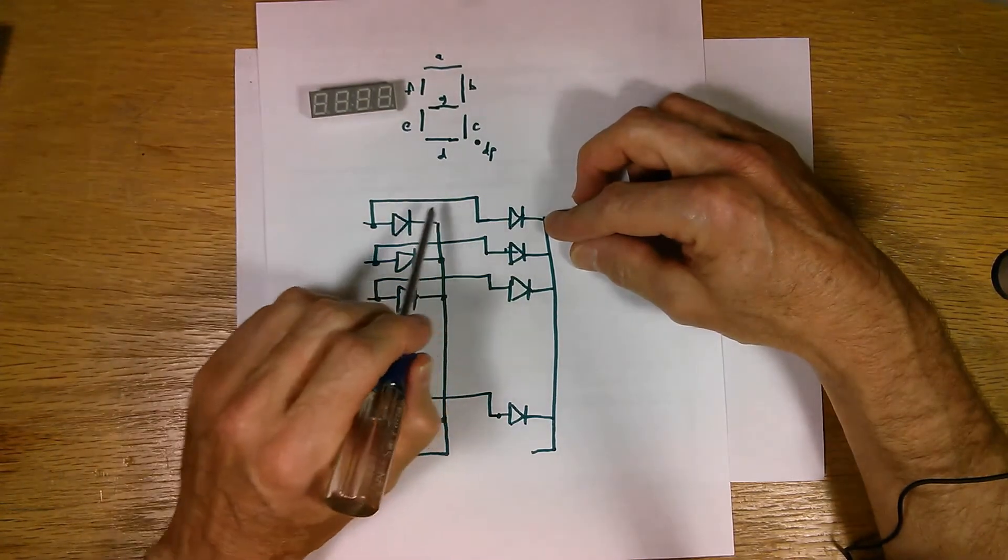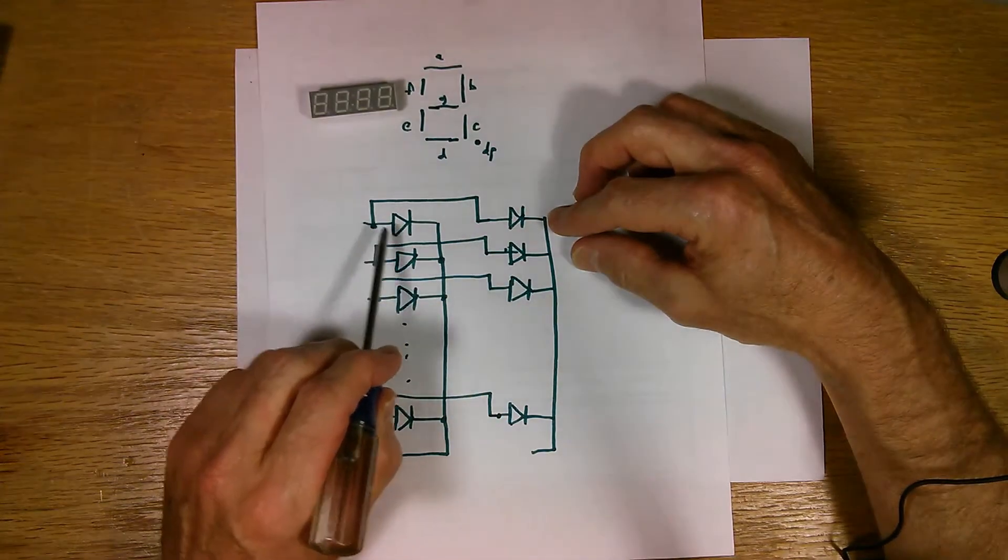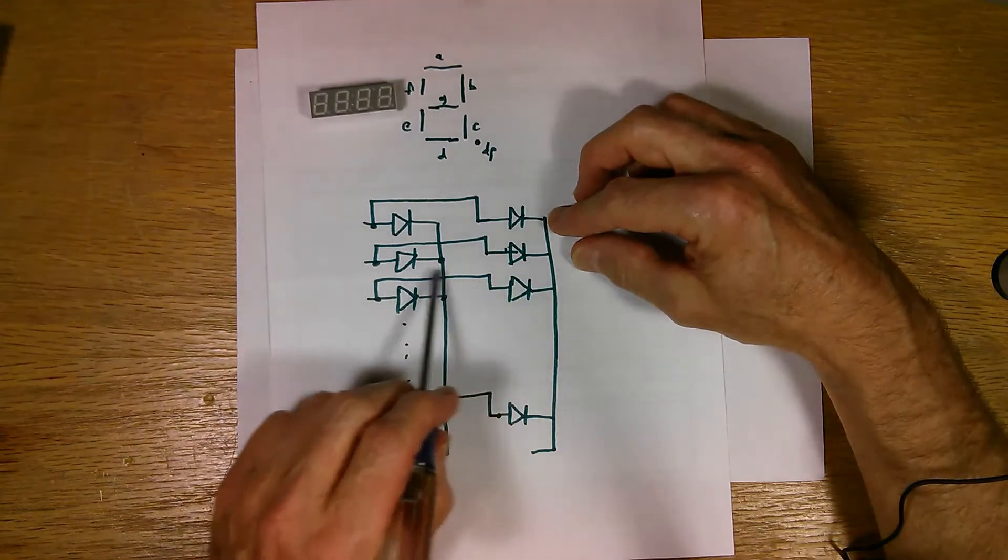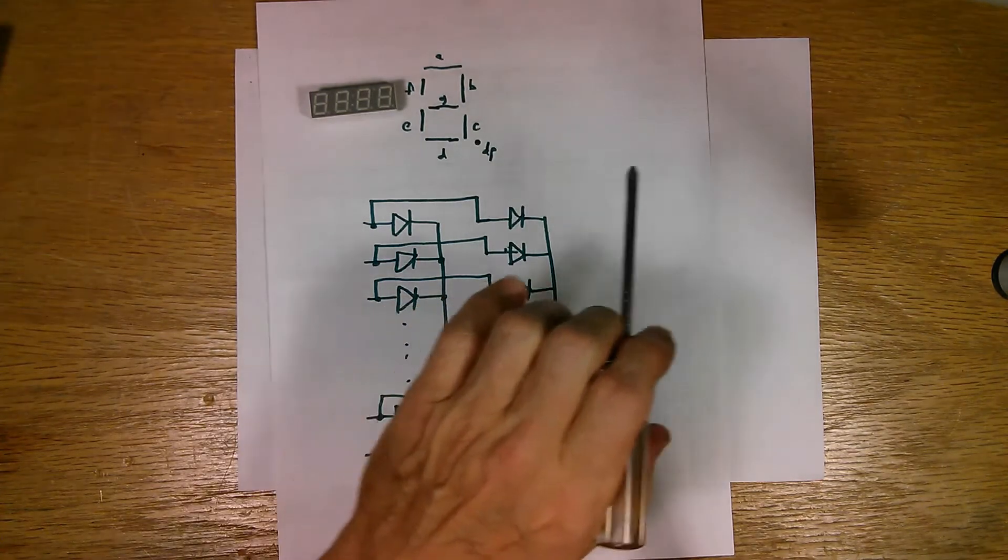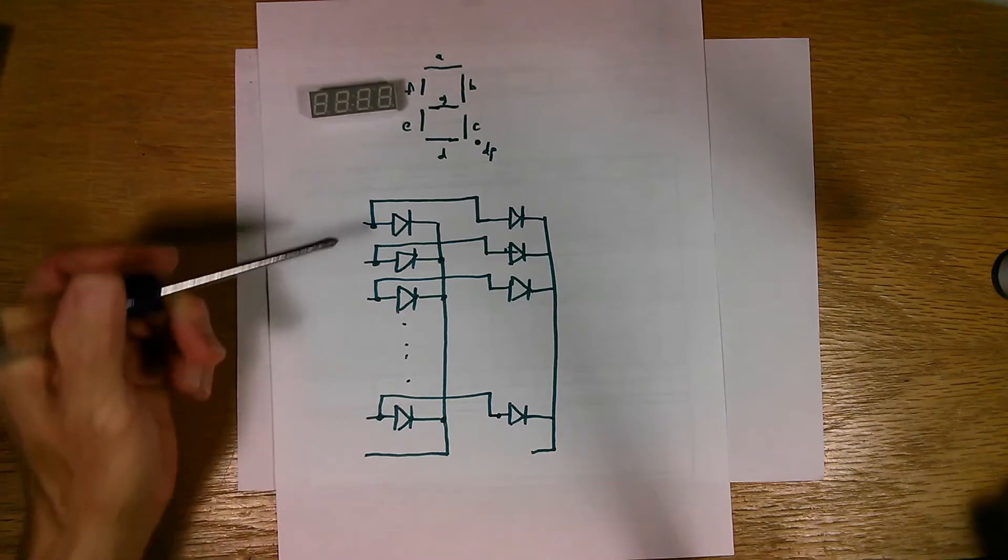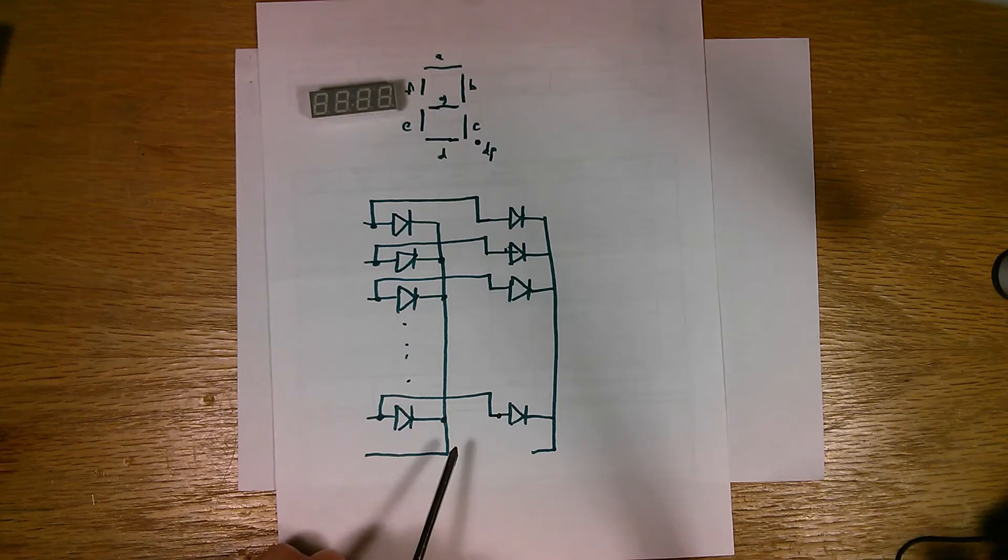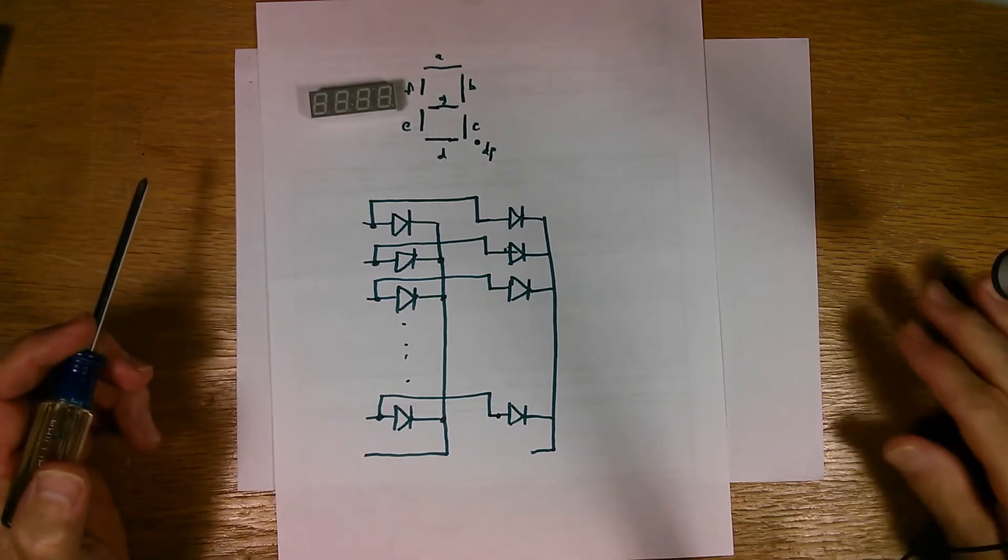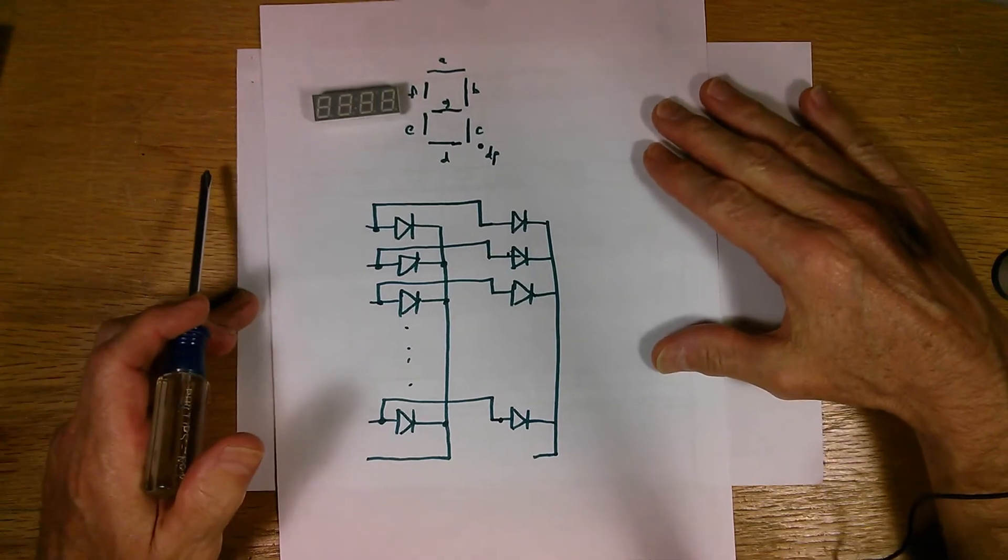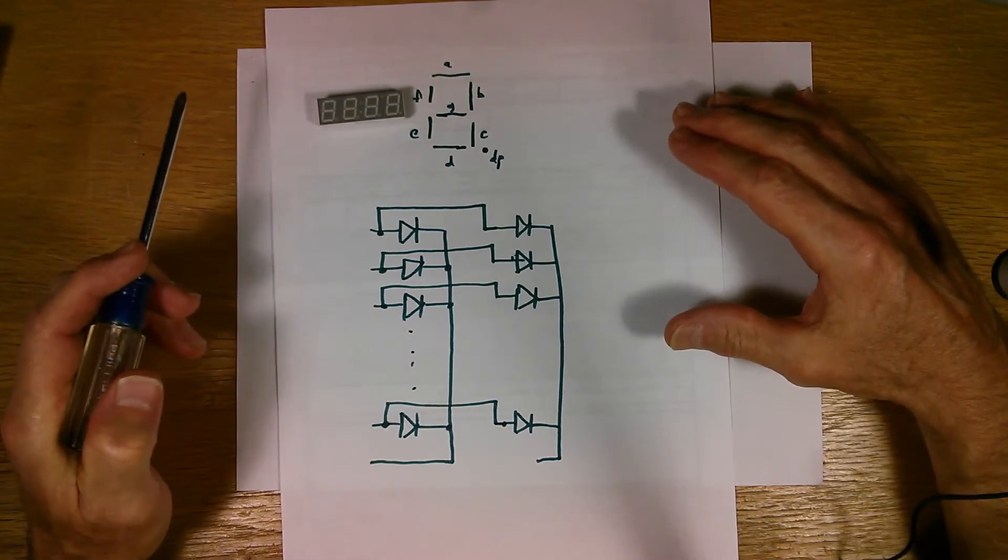The next digit is done the same way. And what they've done is they've paralleled the anodes up for each of the diodes in the second digit. And the common cathode end comes out as a separate pin. And they'll do this for each of the four digits. So all of the anodes of all the four digits are paralleled up. And then all the cathodes are connected together, an independent cathode for each digit. And this simplifies the way of driving the display without using up too many I.O. pins in a microcontroller.